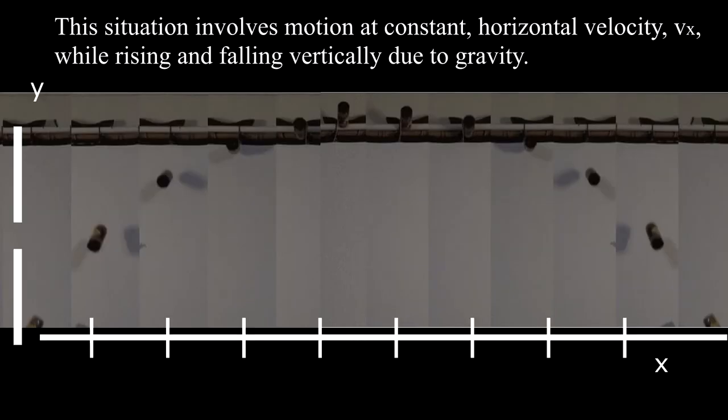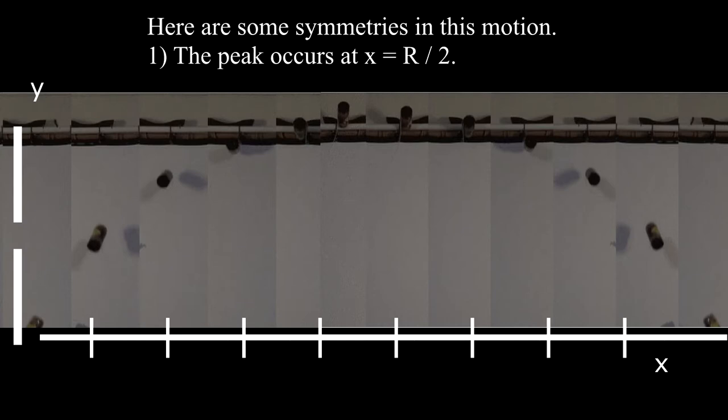This situation involves motion at constant horizontal velocity v_x while rising and falling vertically due to gravity. Here are some symmetries in this motion. First, the peak occurs at x = R/2, which is half the range distance. The time taken to rise equals the time taken to fall.